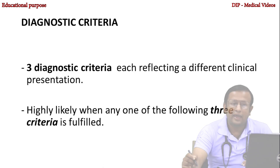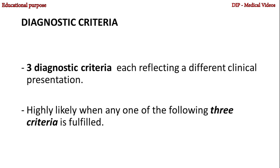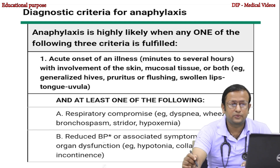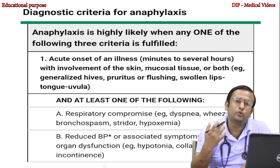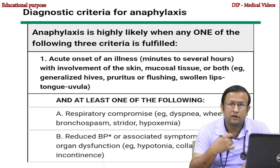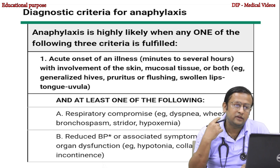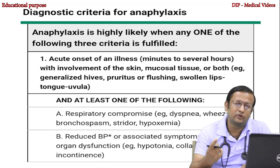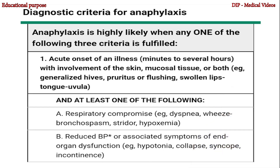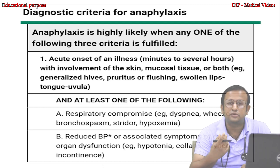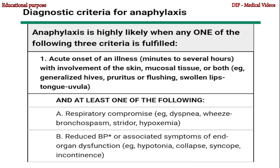Anaphylaxis is highly likely when any one of the following three criteria is fulfilled. Criterion one: acute onset of an illness over minutes to several hours with involvement of the skin or mucosal tissue, or both — for example, generalized hives, pruritus or flushing, swollen lips, tongue, and uvula — and at least one of the following: respiratory compromise such as dyspnea, wheeze, bronchospasm, stridor, or hypoxemia; or reduced blood pressure with associated symptoms of end-organ dysfunction such as hypotonia, collapse, syncope, and incontinence.